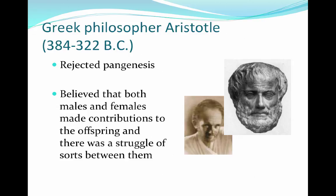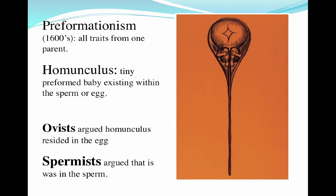Aristotle rejected panogenesis and believed that males and females made equal contributions to offspring. This really led to two parties — similar to democrats and republicans — the ovists and the spermists. Ovists argued that the homunculus actually resided in the egg, while spermists argued it resided in the sperm. A homunculus is a tiny preformed baby that exists in the sperm or egg and then just grows in size. This concept, called preformationism, occurred around the 1600s and essentially said that all traits came from one parent.